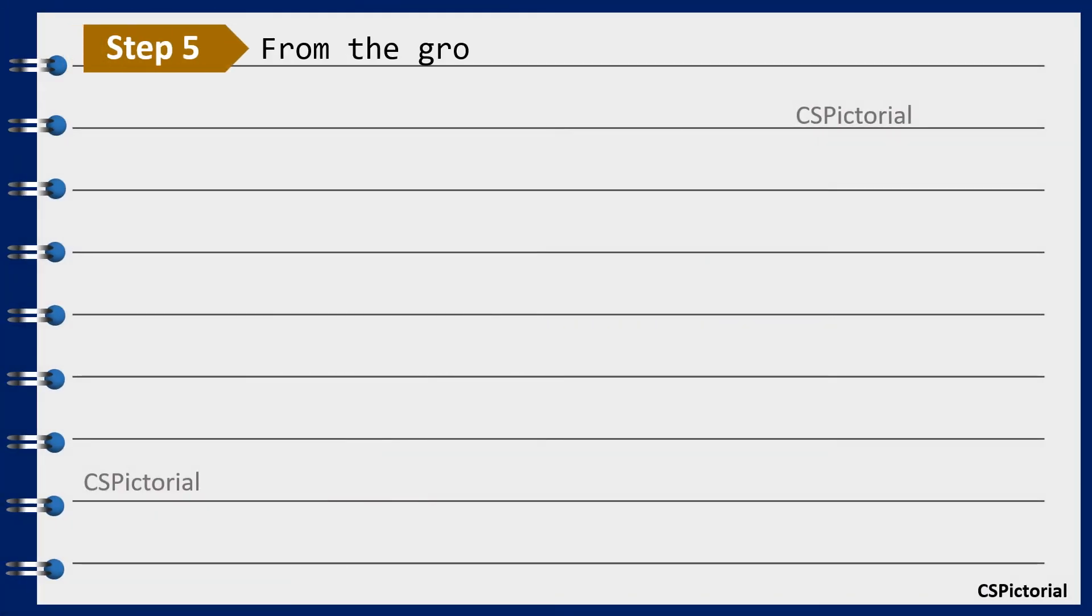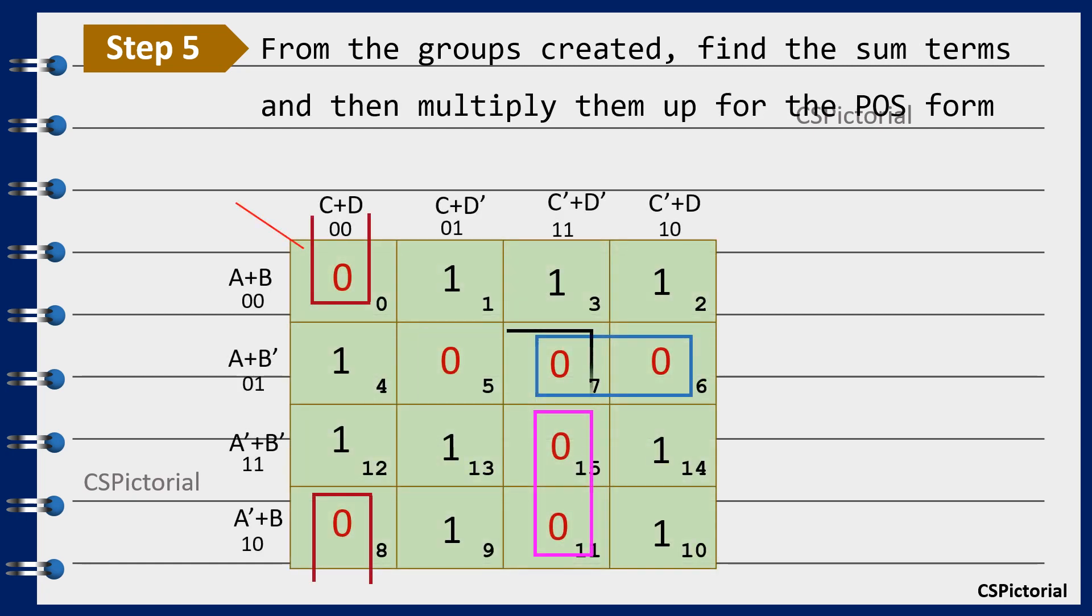From the groups created, find the sum terms and then multiply them up for the POS form. Let us first consider this group. It points to the Boolean terms a plus b bar, c plus d bar, c bar plus d bar. K-map works on the basis of complement laws. So here c and c bar get cancelled and the terms a plus b bar plus d bar get into the final simplified expression.